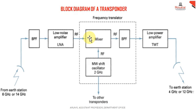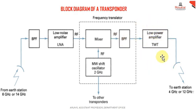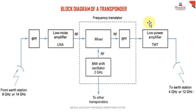Similar to any mixer, it has two inputs: the RF signal and the input from a microwave oscillator. By mixing these two signals, it will produce another frequency, which is then transferred to a low power amplifier and transmitted back to the ground station. A transponder basically works as both a receiver and a transmitter — its main functions are amplification and frequency translation.